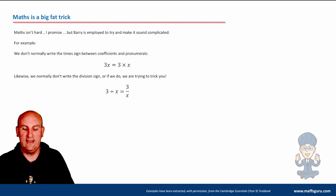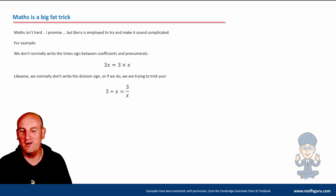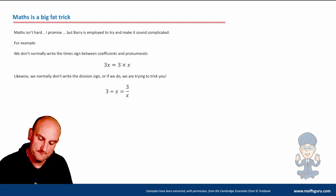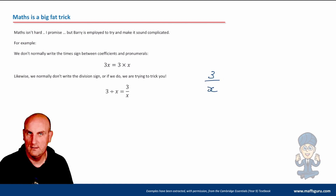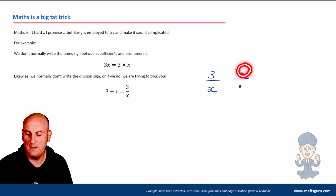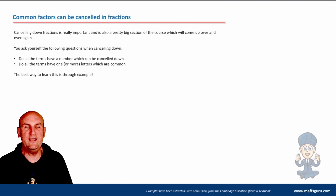Whenever we try to trick you, we might write 3 divided by x using the divide sign — but very rarely do we actually write the division symbol. Really we want you to write it as a fraction: 3 over x. That line between the 3 and the x is a division sign. In fact, fractions even look like division signs — on a calculator the divide sign has a dot, a line, and a dot, where those dots stand for numbers. It's a fraction, it's a divide.